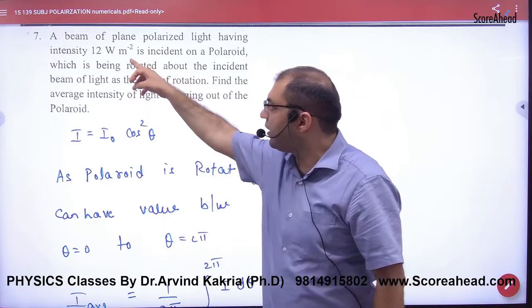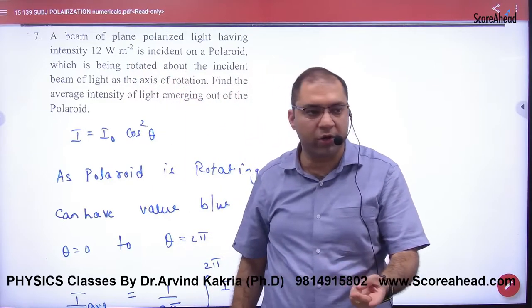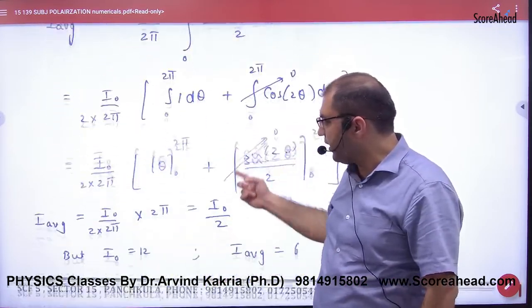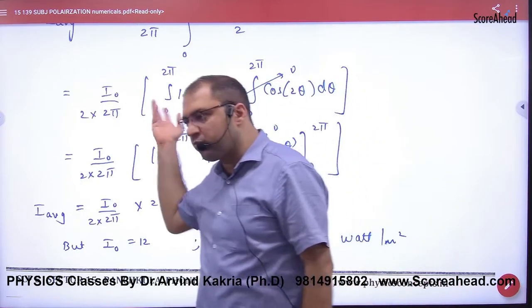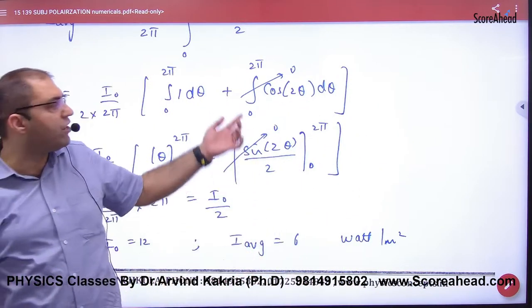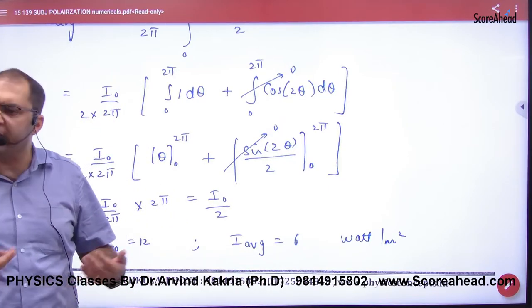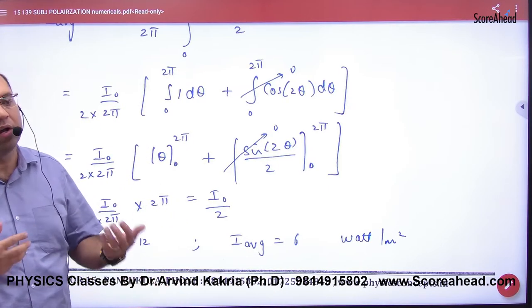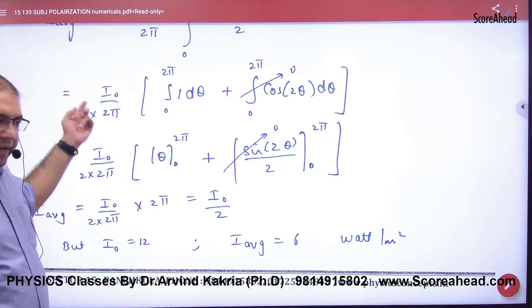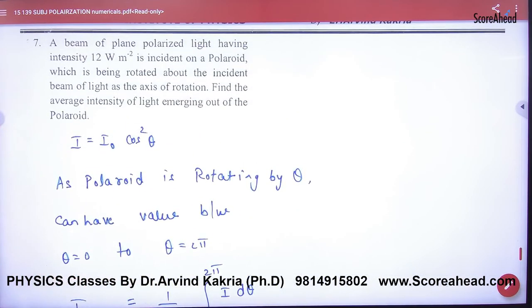So if the total intensity entering is I₀ = 12, what is 12/2? 6. That's the answer. You don't need to do much calculation. This uses the fact that the average value of cos² θ is 1/2. That's the key step.